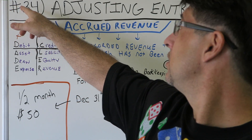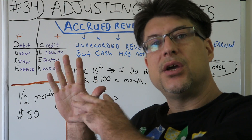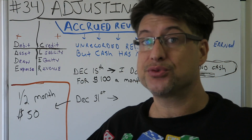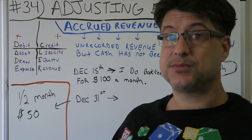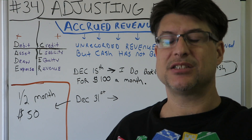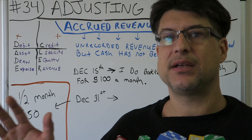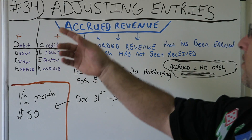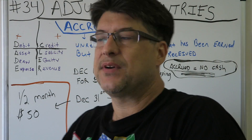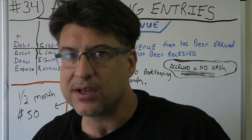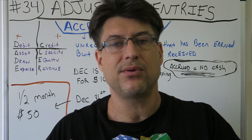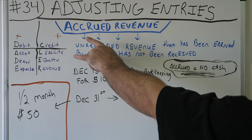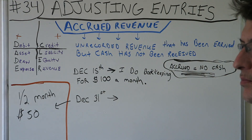If you're doing an accrual basis, you'd write journal entries for accrued items. What's the difference between cash and accrual? Cash basis — when the cash hits your hands. We'll go over that later. For now, I'm going through all the adjusting entries, and I'd be a mess if I leave accrued revenue out, so we're going to accrued revenue today.